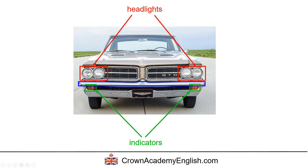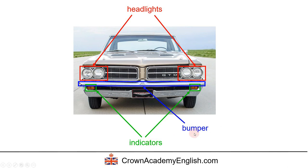And in blue, this big metal bar at the front of the car is called the bumper. So the bumper protects the car. So we have the headlights, indicators and a bumper.